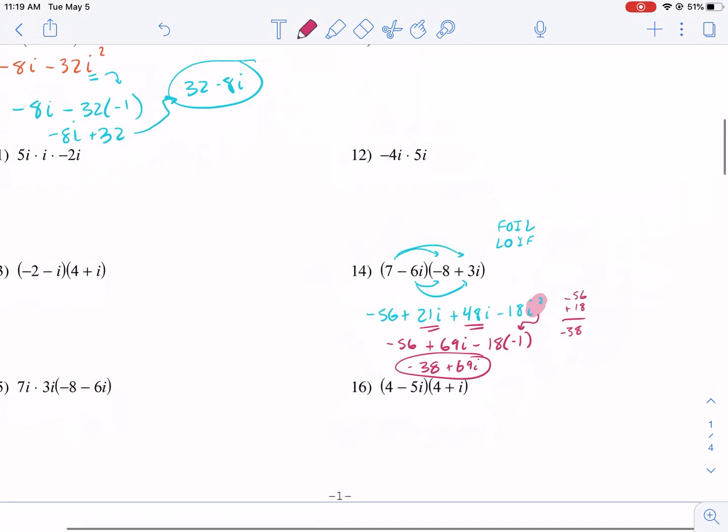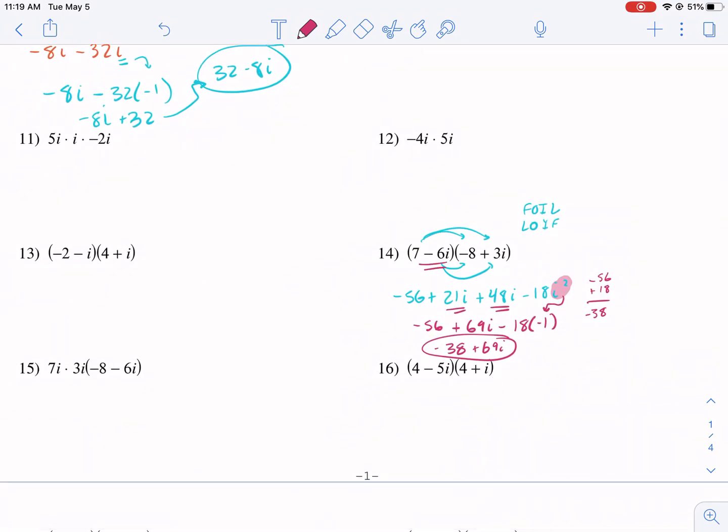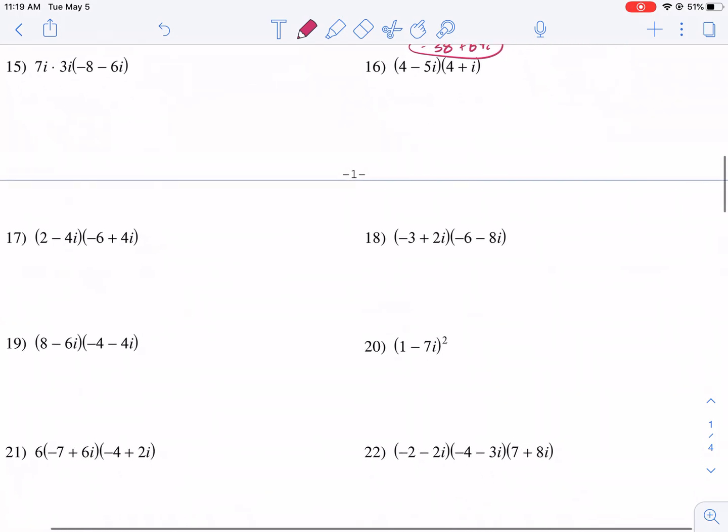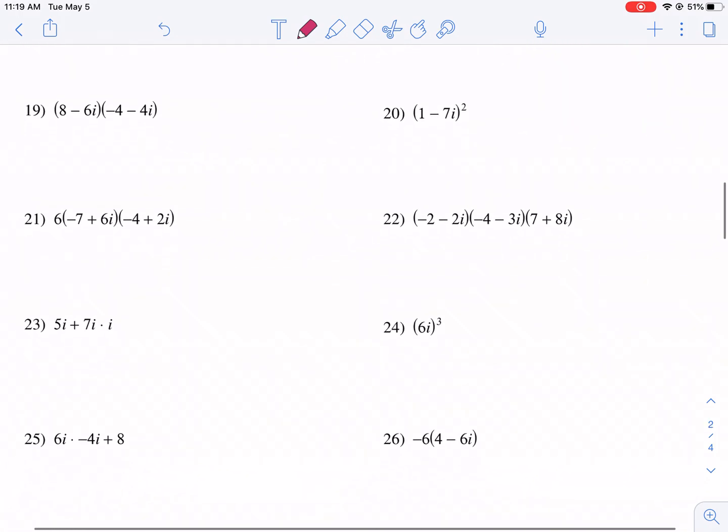So multiplying complex numbers with binomials is basically the same as doing it with variables. Something like (x + 3) times (x + 7). It's the same process. You just FOIL. Let's maybe go to a more complicated one.